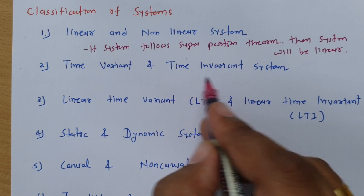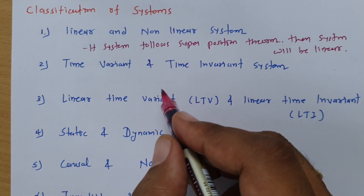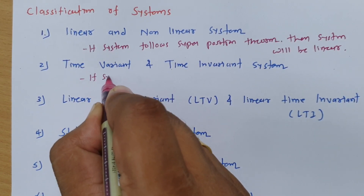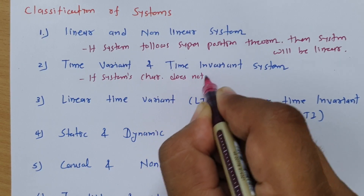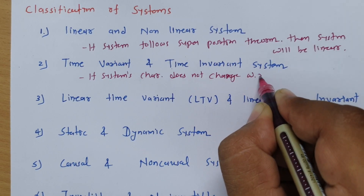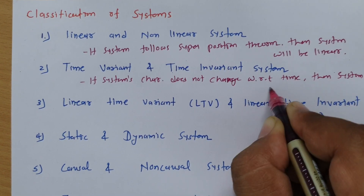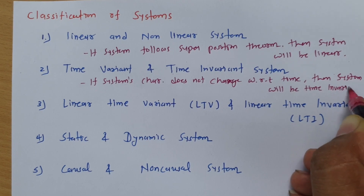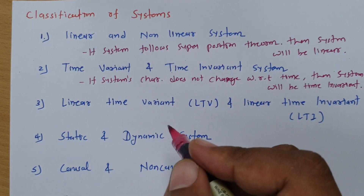Next is time variant and time invariant systems. If a system's characteristic does not change with respect to time, then the system will be time invariant. So if the system's characteristic is not changing with respect to time, one can say it will be time invariant.